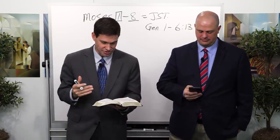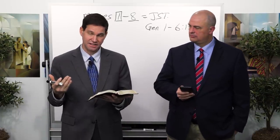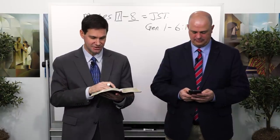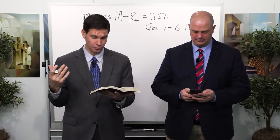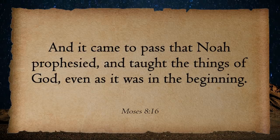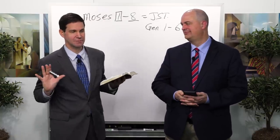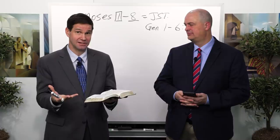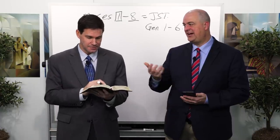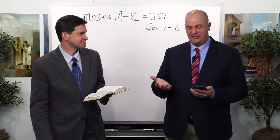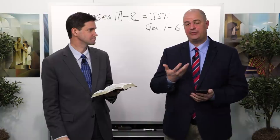Notice how it shifts — Noah's sons have children, and their children, so these are Noah's grandchildren, begin to intermarry with the people of the world. Verse 16: Noah prophesied and taught the things of God even as it was in the beginning. He's proactively trying to prophesy and teach and cry repentance. He's not teaching a new gospel — even as it was from the beginning. He's teaching the very things that Adam would have known, the very things that we have in the Restoration.